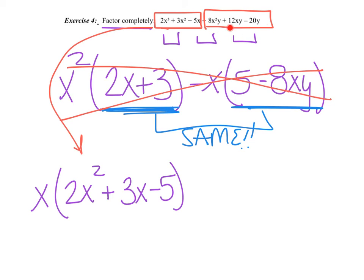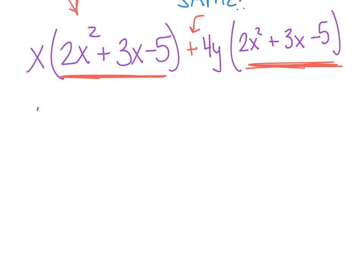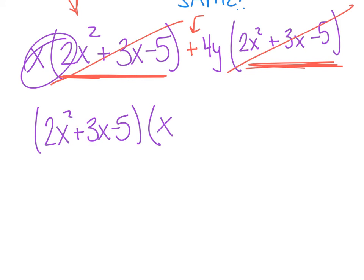In this group, I obviously can pull out a y, and it looks like they're all divisible by 4 as well. Do you want to pull out a positive or a negative? That's the most important part is that you put a sign there. Let's pull out a positive 4y. So then, 8 divided by 4 is 2x squared. Well, that's a good start. Plus, let's make that a 3x, yay, minus 5. Why am I saying yay? I know I did it right if these quantities are the exact same. So now let's pull out our big GCF of 2x squared plus 3x minus 5. What's left? In this term, there's an x left, and in this term, there's a plus 4y.